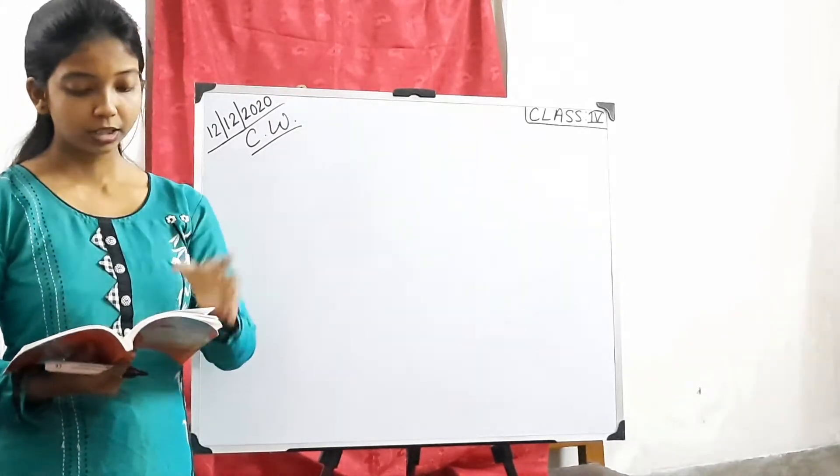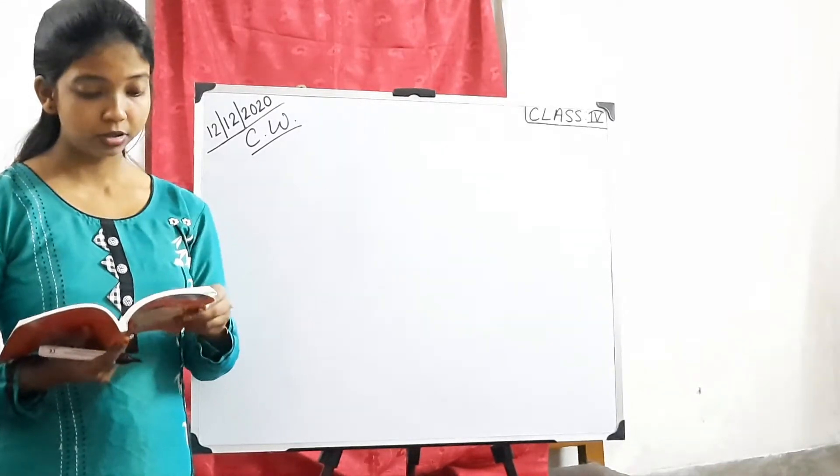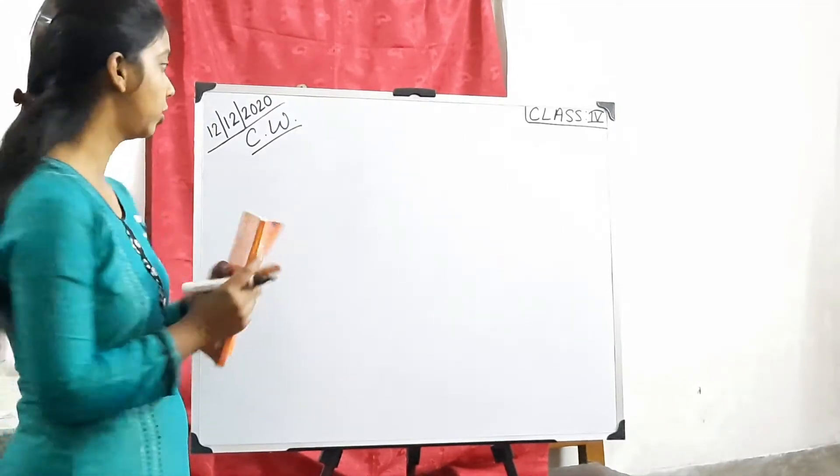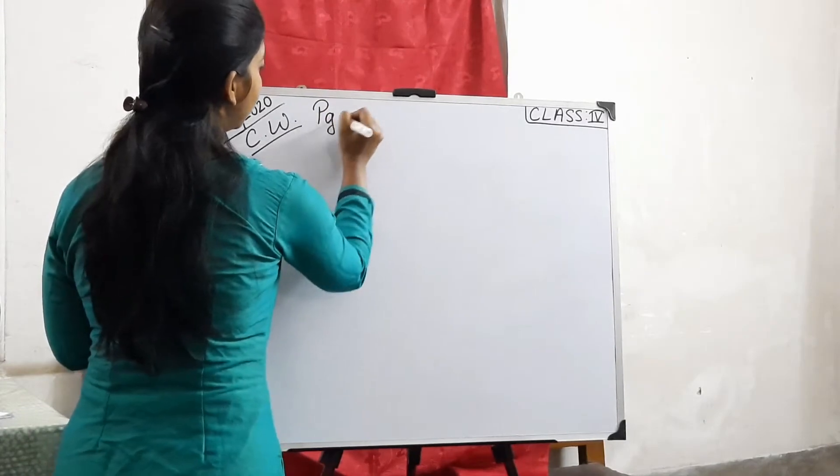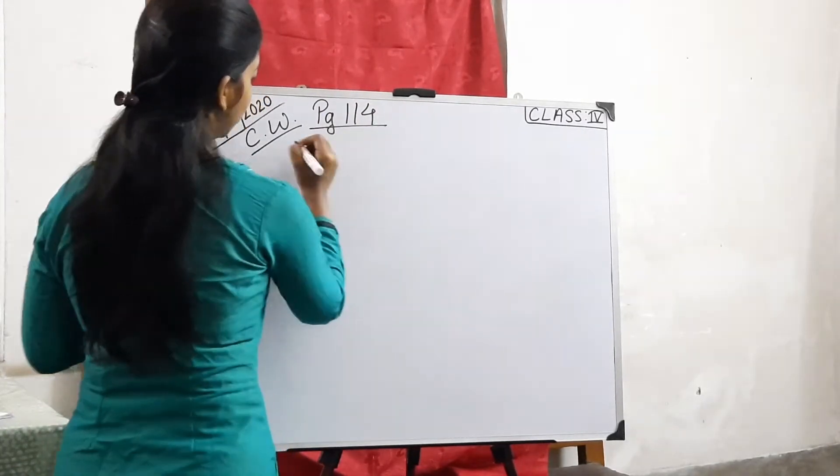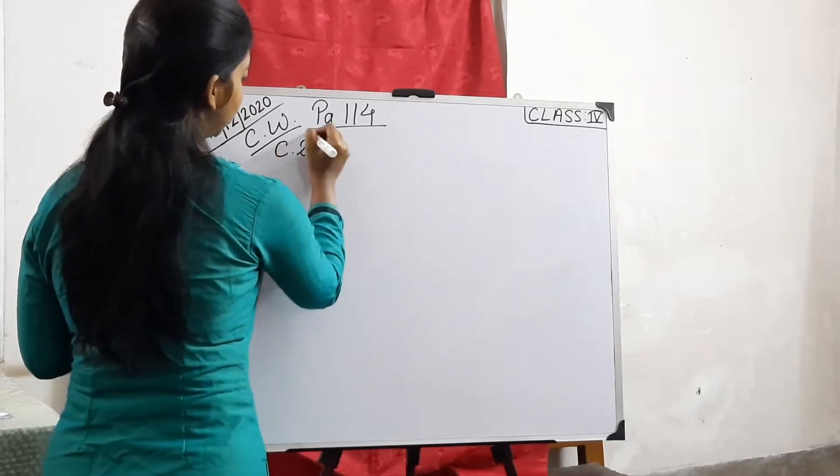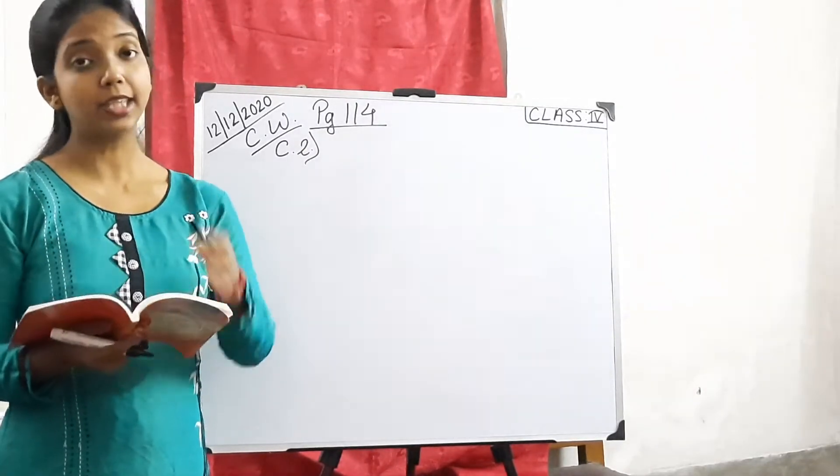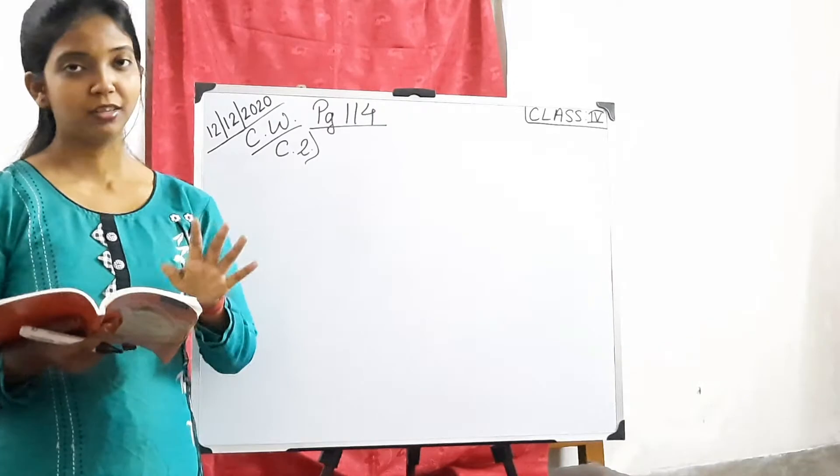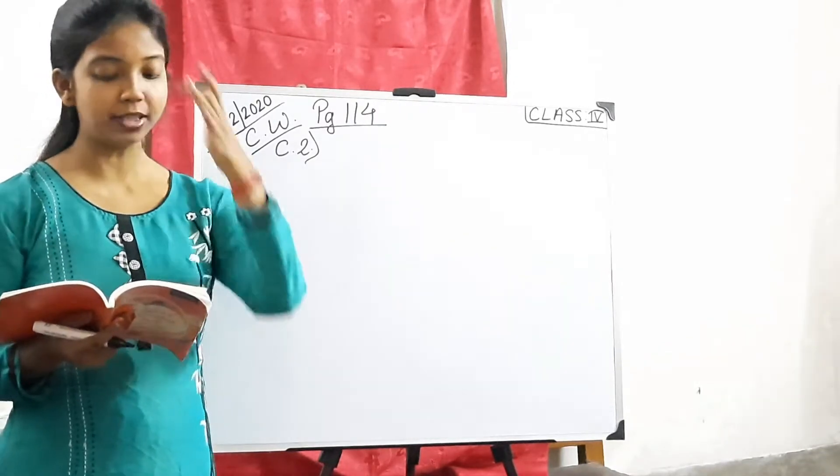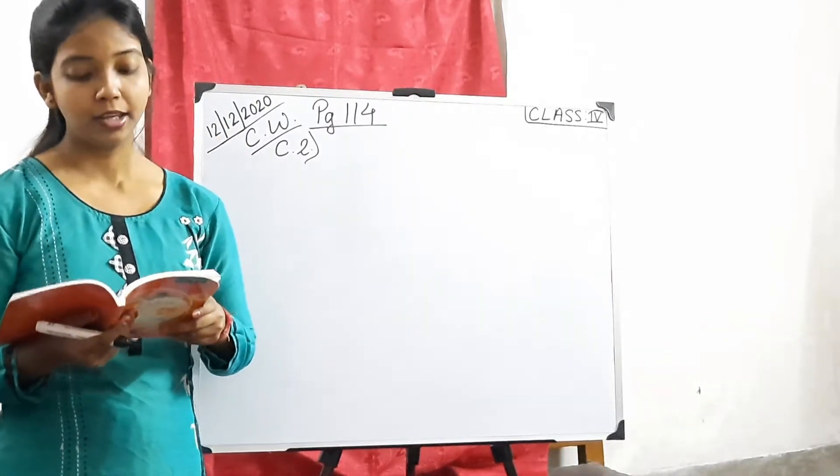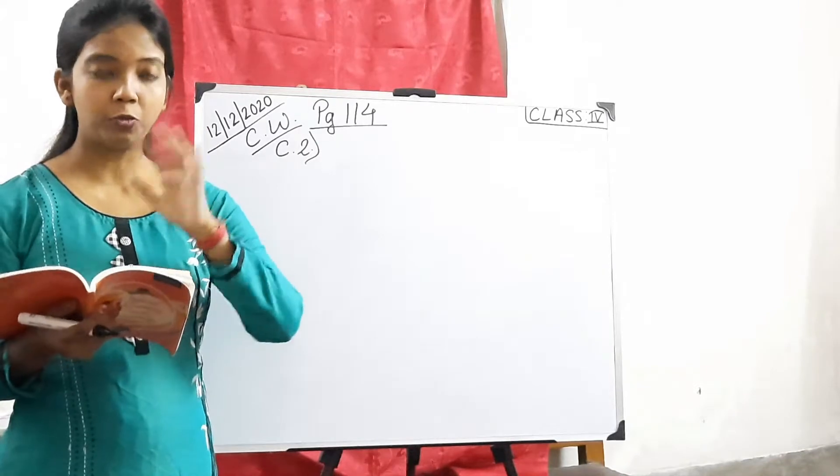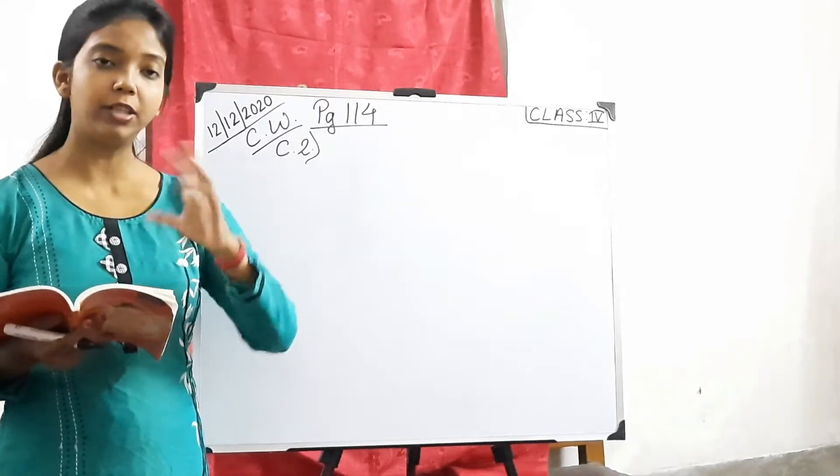Now we are going to solve page 114, question number C, second part. What's the question? Find words in the poem which have the same meaning as the following. Some words are given below. You have to find the same words whose meaning is same, the words with a similar meaning.